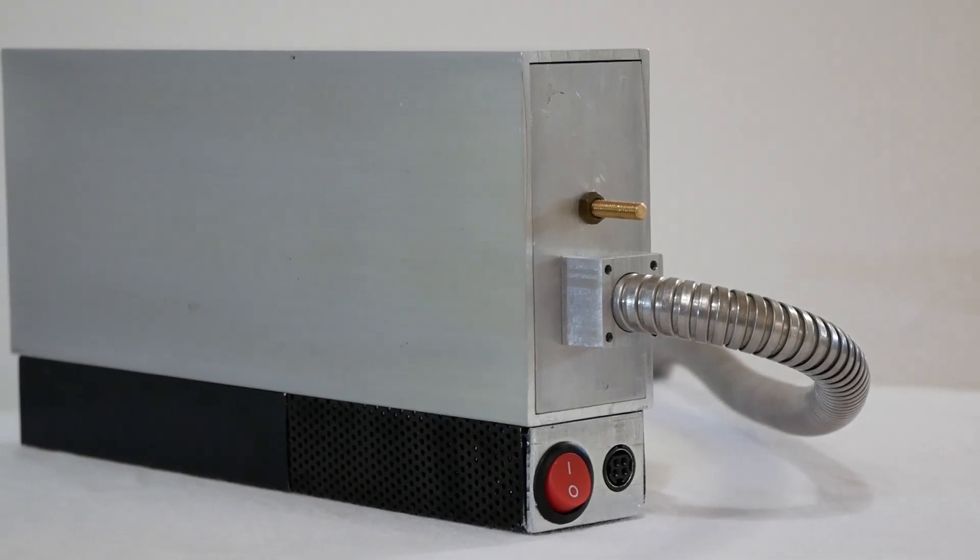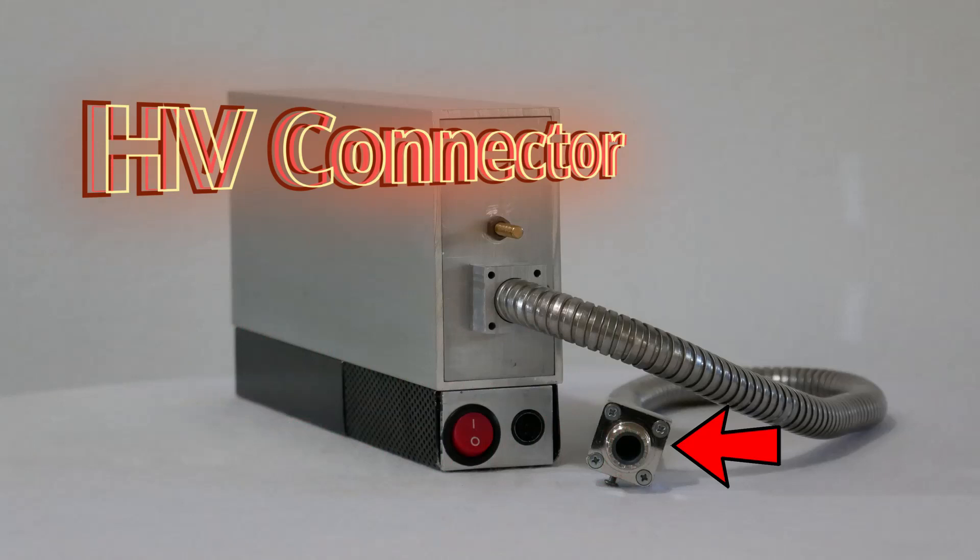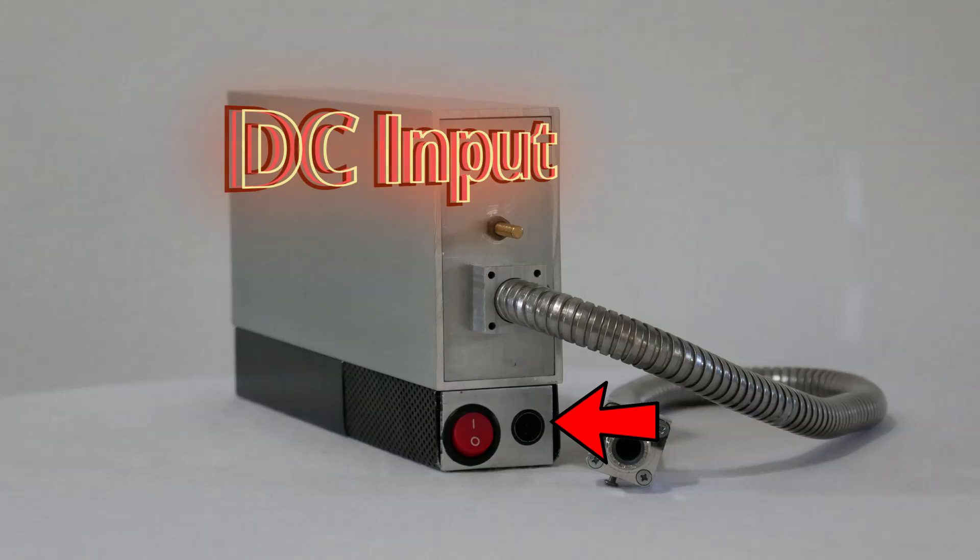On the back of the generator, you will find M5 threaded stud for grounding, high voltage output connector, main power on-off switch, and DC input connector.